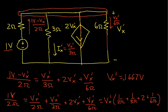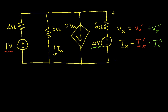Now, Ix prime, which is Vx prime over 3 ohms, equals 0.0555 amps. So from the 1 volt source, Vx prime is 0.1667 volts and Ix prime is 0.0555 amps.